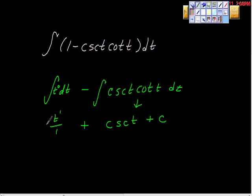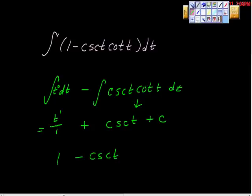So there's our function. Go back and take its derivative. The first derivative of t is 1. The first derivative of cosecant x is opposite cosecant t cotan t. So if we differentiate, we get right back to the antiderivative.